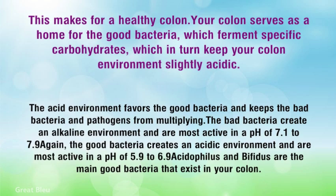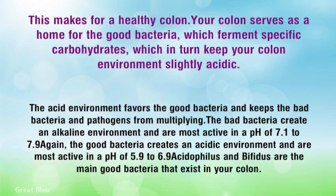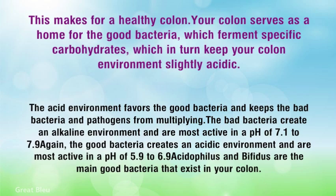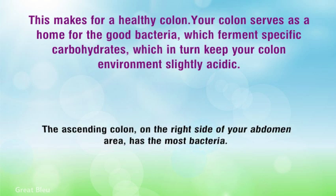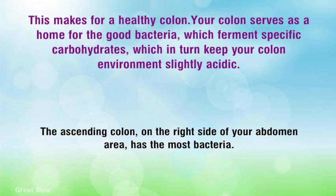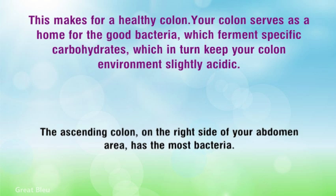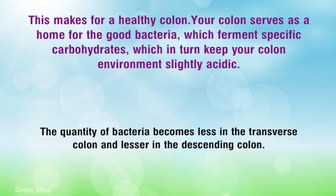Again, the good bacteria create an acidic environment and are most active in a pH of 5.9 to 6.9. Acidophilus and Bifidus are the main good bacteria that exist in your colon. The ascending colon on the right side of your abdomen area has the most bacteria. The quantity of bacteria becomes less in the transverse colon and lesser in the descending colon.